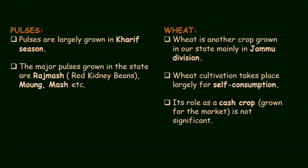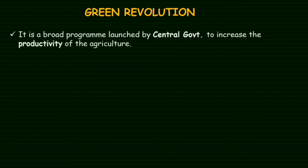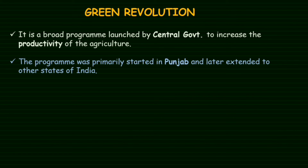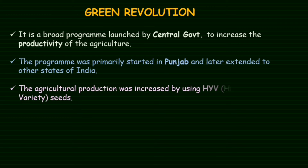Green Revolution is an important topic. It is a broad program launched by the central government to increase agricultural productivity. The program was primarily started in Punjab and later extended to other states of India. Agricultural production was increased by using HYV — High Yielding Variety — seeds, particularly for wheat and rice.